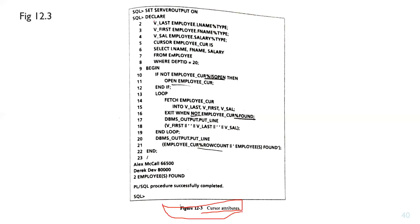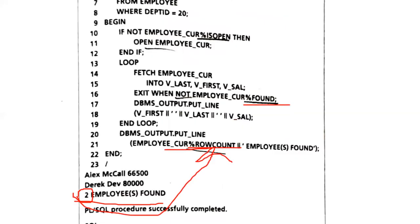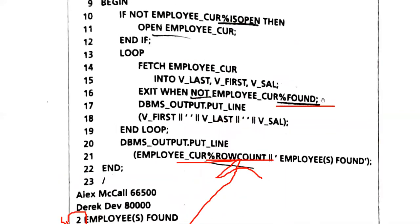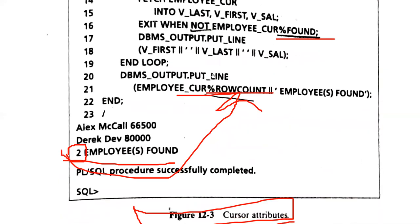In the declaration section you declare variables and the cursor. In the begin section, if the employee cursor is not open, open it. The %ROWCOUNT attribute tracks how many rows have been fetched. The query retrieves first name, last name, and salary. Using %FOUND and %ROWCOUNT together, you can select a specific number of employees — for example, selecting two employees based on employee ID. The output shows two employees found.